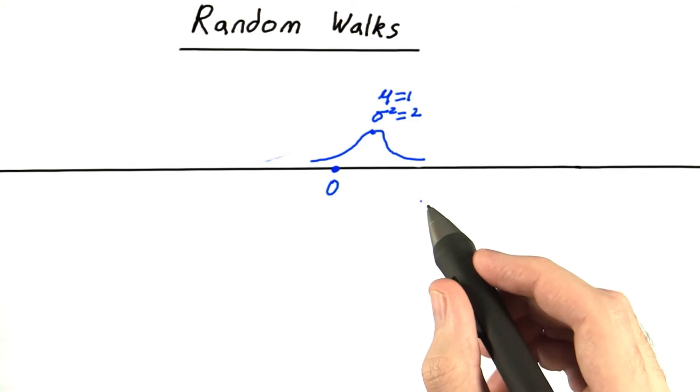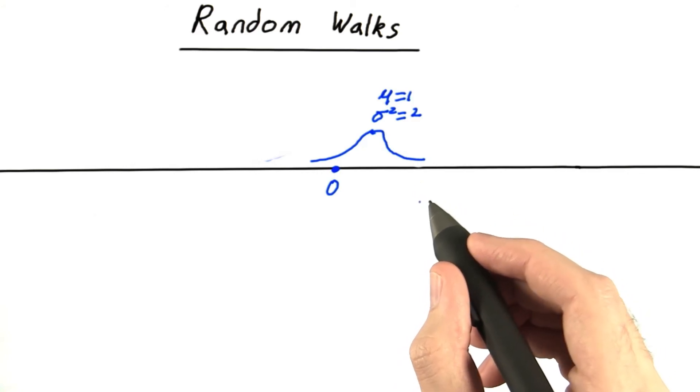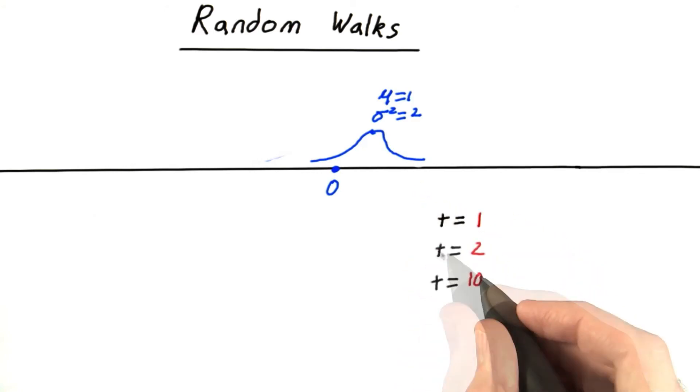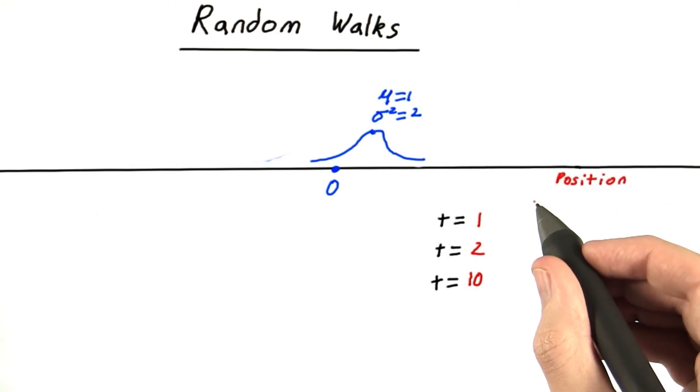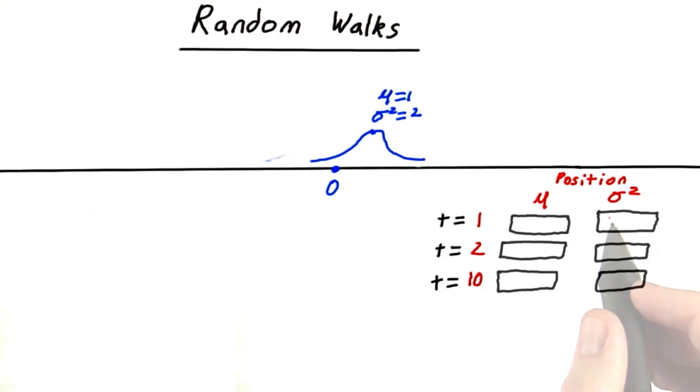Now, to really test your understanding, I'd like you to tell me at 1 second and 10 seconds, what are the mean and variance of the object's position?